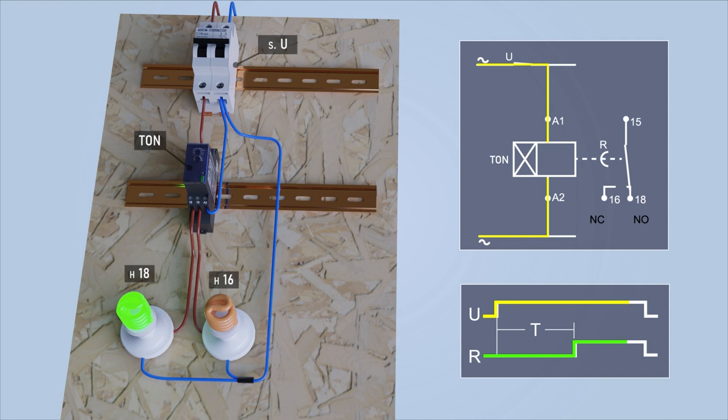If we lower the U switch lever to de-energize the timer coil, contacts 16 and 18 immediately return to their default state.